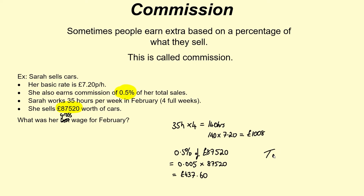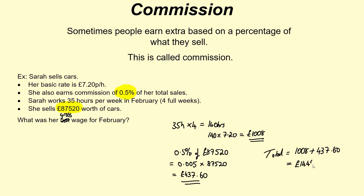The total for her February wage is those two numbers added together — her basic rate pay plus her commission pay. So £1,008 plus £437.60 gives us £1,445.60.